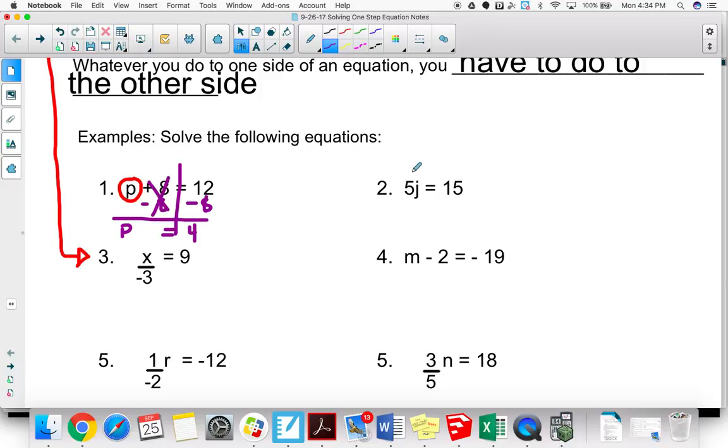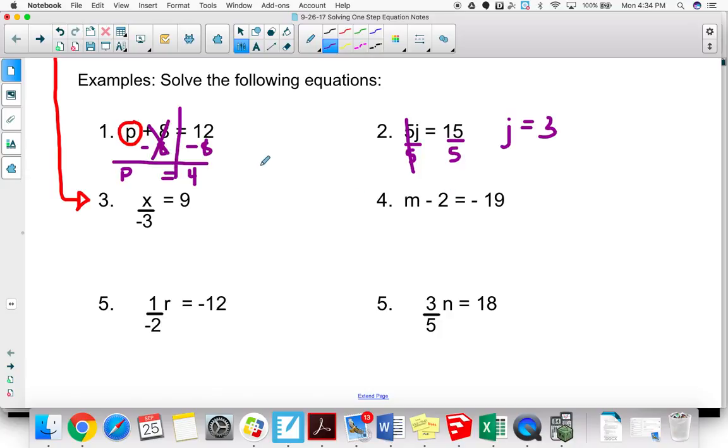On number 2, the operation that's being used is multiplication. Whenever you see a variable next to a number like this, it means multiplication. And so the opposite of multiplying a number by 5 is going to be to divide both sides by 5. And notice I'm putting division in the denominator. So these 5s are going to cancel out because J times 5 divided by 5 just leaves us with J, whatever we started with. And then 15 divided by 5 is 3.